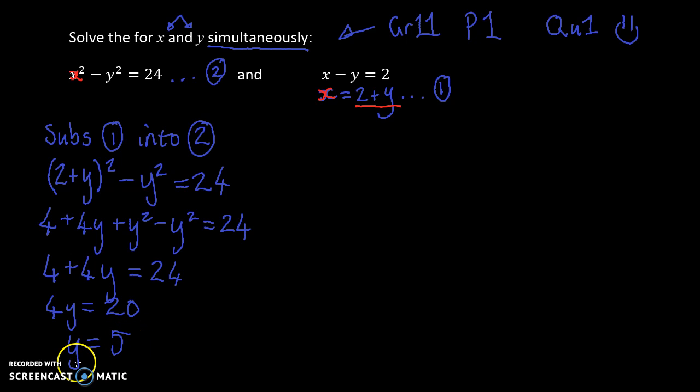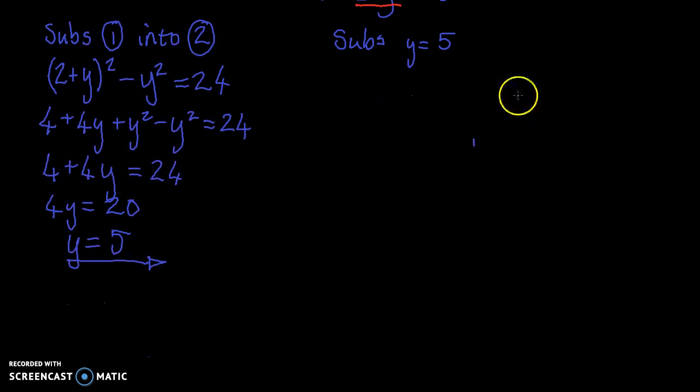And this is another point where people are going to go wrong. They're going to go, okay, I've solved for y. It's done. And they completely forget that we also need to solve for x. So I start the next part of my problem, where I say, subs y is equals to 5 into,